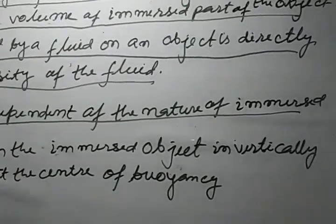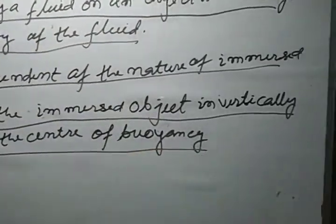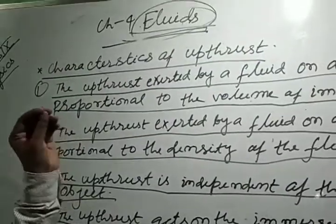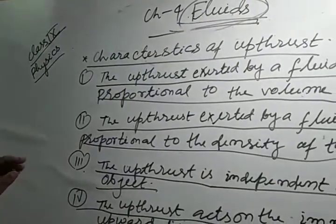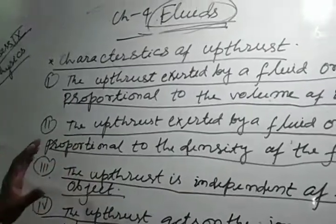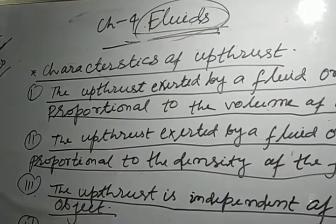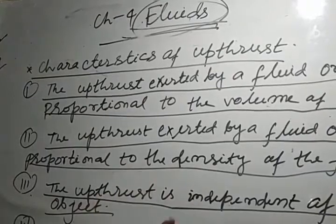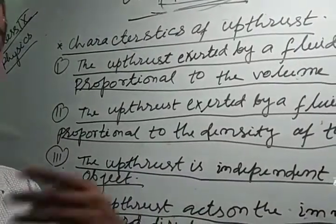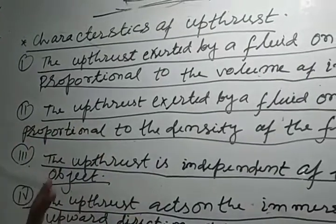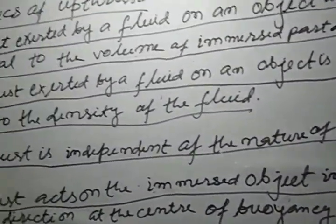The 4th characteristic: the upthrust acts on the immersed object in a vertically upward direction at the center of buoyancy. This means if the volume of the immersed part is increased, then upthrust also increases. If the density of the liquid is increased, then upthrust also increases. If we immerse two different objects of the same volume in a liquid, both experience the same upthrust because both displace the same amount of water. So upthrust is independent of the nature of the immersed objects.